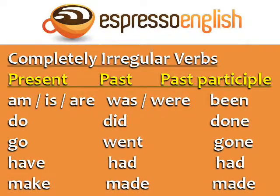Finally, we have the completely irregular verbs. These verbs don't follow any specific pattern, so you just need to memorize their past and past participle forms. The verb 'to be' is am, is, or are in the present; was or were in the past; and been in the past participle. Do, did, done. Go, went, gone. Have, had, had. Make, made, made.